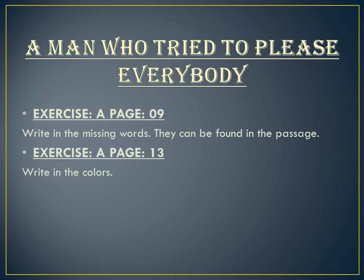The next chapter is 'The Man Who Tried to Please Everybody.' He failed to please everybody and lost his only donkey, which he wanted to sell. To sell the donkey he went to town, and something happened there, as we have discussed in the chapter. We have done Exercise A of page number 9, which is in fill-in-the-blanks format where you write the missing words. There is also Exercise A of page number 13, in which you will have to write in the colors.